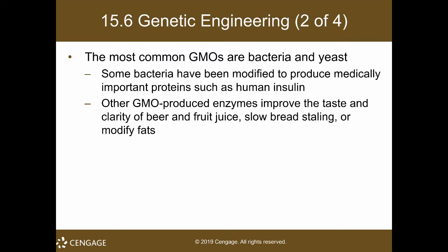The most common GMOs are bacteria and yeast because they are far easier to manipulate. It is far easier to insert recombinant plasmids and vectors into bacteria and yeast rather than into multicellular organisms such as plants or even animals.